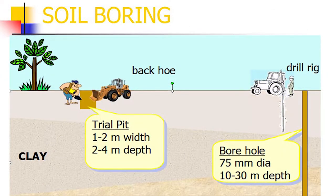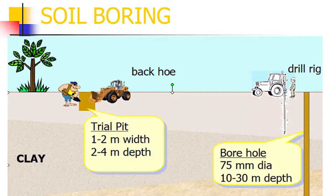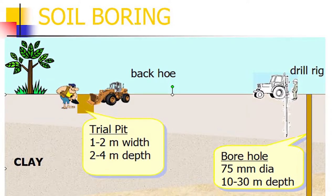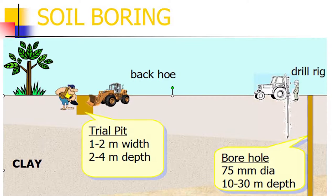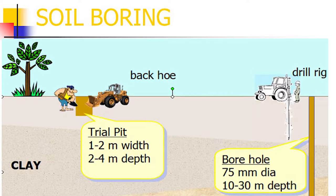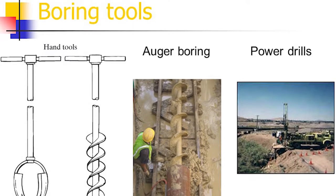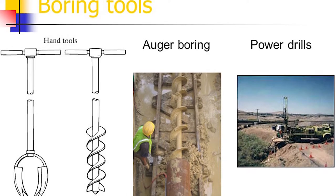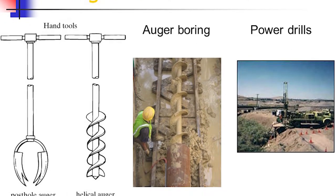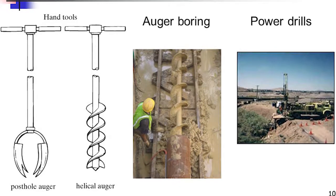Soil borings or depth of investigation methods include trial pits of 1 to 2 meters width and 2 to 4 meters depth in clay soils, and borehole drill rigs. Hand tools include post hole augers and helical augers for auger boring, which can go to certain depths. Power drills operated by winch can go to depths of 10 to 20 meters.